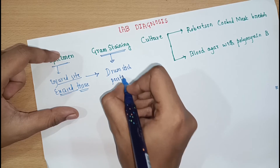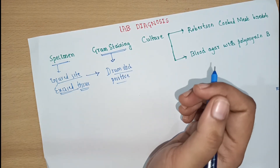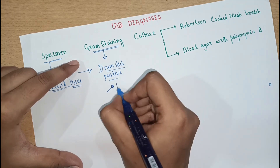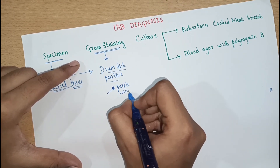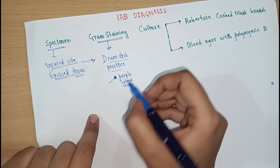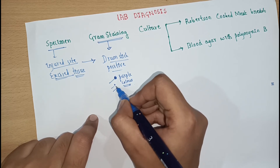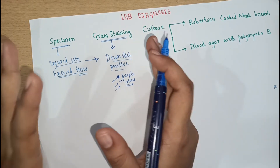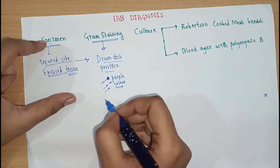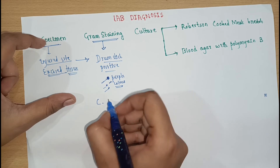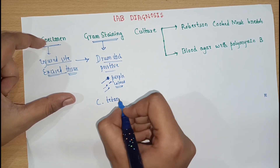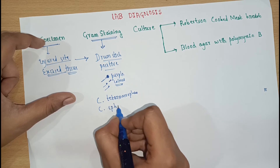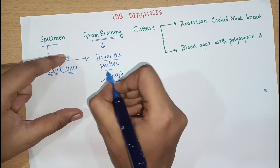Clostridium tetani is a gram-positive obligate anaerobic bacteria that produces terminal round spores, which appear purple in color. However, gram staining alone is not sufficient for Clostridium tetani, because there are other species such as Clostridium tetanomorphum and Clostridium sporogenes, which are similar in appearance. Therefore, you cannot rely only on gram staining. If you find the drumstick appearance, send the sample for further confirmation by culture.